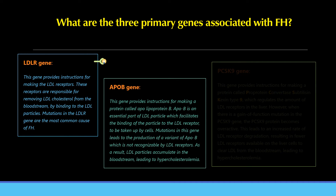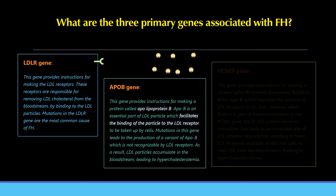The second is the APOB gene, which provides instructions for making a protein called apolipoprotein B. APOB is an essential part of the LDL particle, which facilitates the binding of the particle to the LDL receptor to be taken up by cells. Mutations in this gene lead to the production of a variant of APOB not recognizable by LDL receptors, causing LDL particles to accumulate in the bloodstream and leading to hypercholesterolemia.